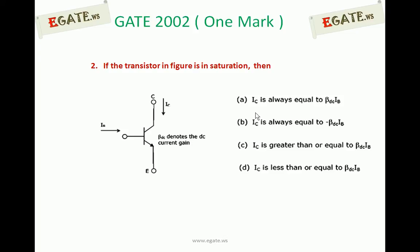If the transistor is in saturation, which of the following is correct? A: IC is always equal to beta DC times IB. B: IC is always equal to minus beta DC times IB. C: IC is greater than or equal to beta DC times IB. D: IC is less than or equal to beta DC times IB.